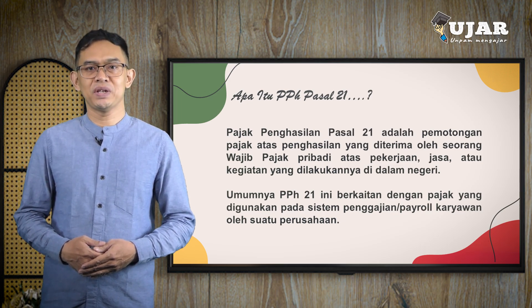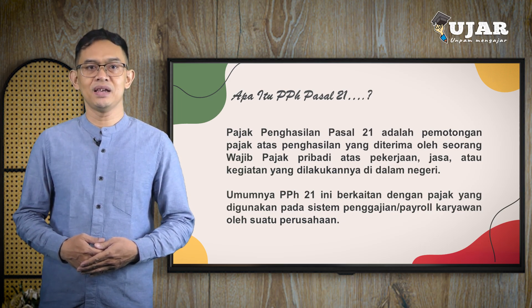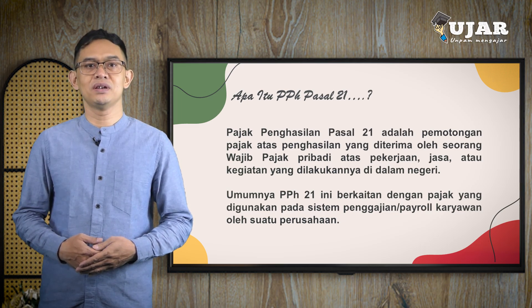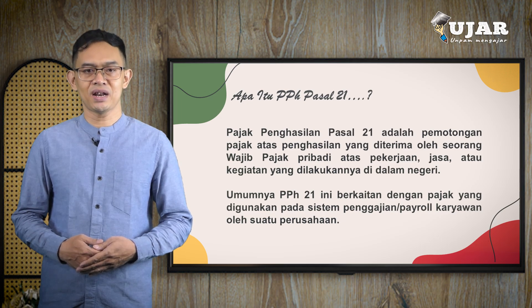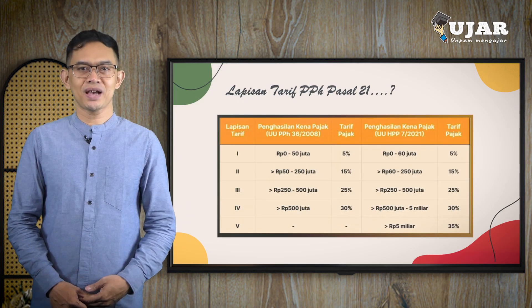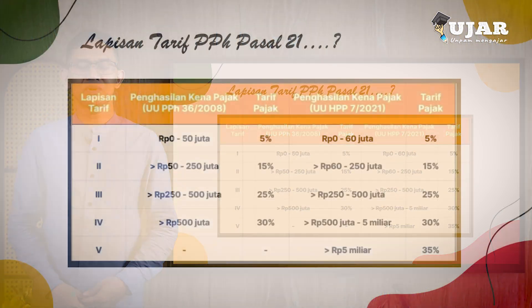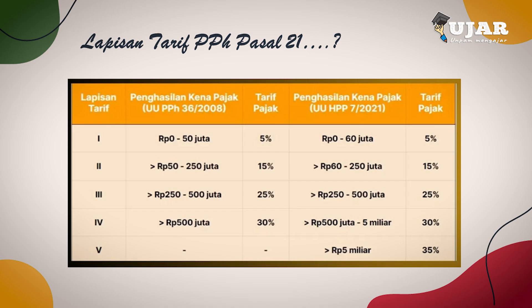PPH Pasal 21 final adalah pajak penghasilan yang dikenakan terhadap penghasilan karyawan dari uang pesangon, uang manfaat pensiun, tunjangan hari tua, dan jaminan hari tua. Pemerintah telah mengatur kembali pemotongan PPH 21 yang tertuang dalam Peraturan Pemerintah No. 58 Tahun 2023 tentang tarif pemotongan PPH Pasal 21 atas penghasilan sehubungan dengan pekerjaan, jasa, atau kegiatan wajib pajak orang pribadi.